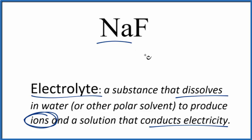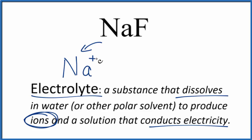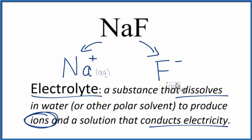Since sodium compounds are very soluble, we expect NaF to dissolve in water. We'd end up with the sodium ion Na⁺ — sodium is in group one so it'll always be one plus — and then the fluoride ion F⁻. We put aqueous after these since they are dissolved in water.